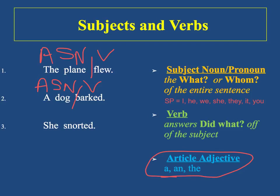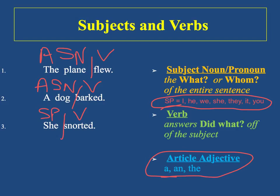Look at the last sentence: She snorted. Who snorted? She. Now, if you'll notice, we have something called subject pronouns, which we label S-P. Subject pronouns answer the same two questions — who and what — that a subject noun answers, except it is a pronoun, which is a word that takes the place of the noun. We have seven subject pronouns: I, he, we, she, they, it, and you. Any time you see one of these seven words, you'll label it S-P for subject pronoun. To find the verb, we say she did what? The answer is snorted, so snorted is our verb. Just like we do with subject nouns and verbs, we're going to find our subject pronoun and our verb and draw a line between the two.